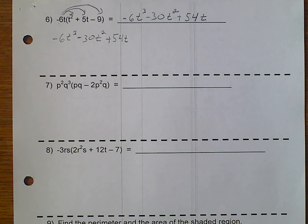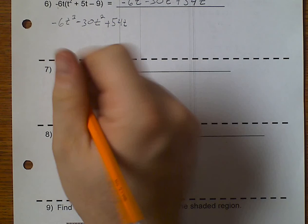So, a negative 6t cubed minus a 30t squared plus 54t. Make sure that you write your t's in such a way that they do not get confused with plus signs. Alright, moving on to number 7.